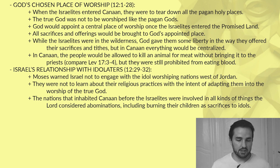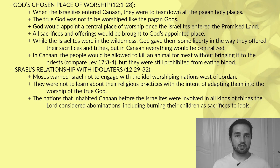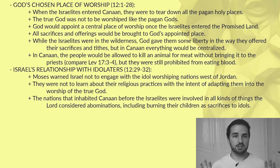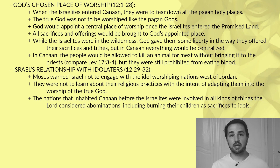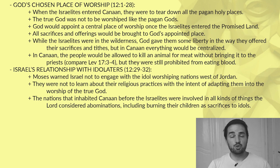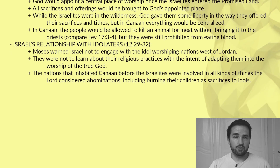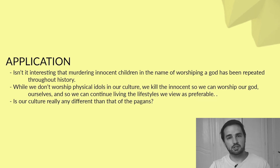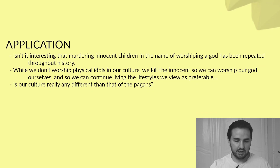We're told that the nations that inhabited Canaan before the Israelites were involved in all kinds of things that God abhorred — things he considered reviling — including burning their children as sacrifices to these idols. So that is Deuteronomy chapter 12, and that last point is going to lead us into our application.